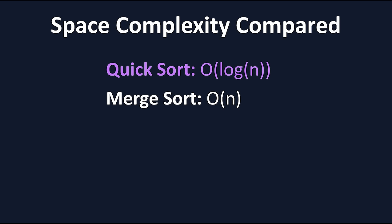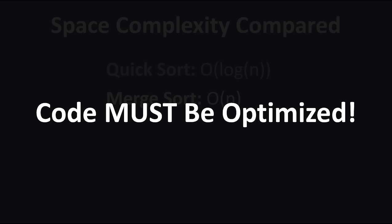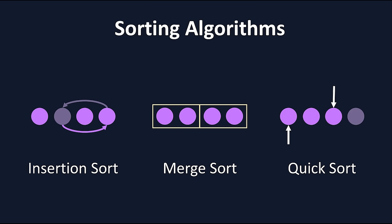However, one of the largest drawbacks to Quicksort is that all of this relies on the code being optimized. Any little mistake or inefficiency in the Quicksort code can cause the algorithm to run much slower, and it is a much harder algorithm to implement than Mergesort. That wraps up our sorting algorithms. Before this video ends, I want to take a look at one more type of algorithm, which is a special type of algorithm.